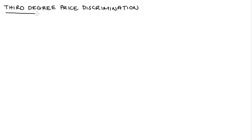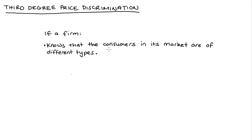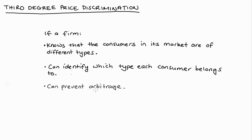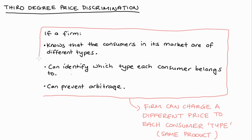Hi everyone. In this video I'm going to talk about third-degree price discrimination. In general, to give a really brief summary: if a firm knows that the consumers in its market are made up of different types, if the firm can identify which type any of their individual consumers belongs to, and if they can prevent what we call arbitrage, then the firm can charge different prices to their different types of consumer for the same good. That will be them engaging in third-degree price discrimination. So let's talk about each of these points in turn.